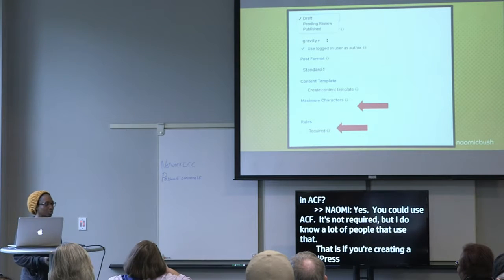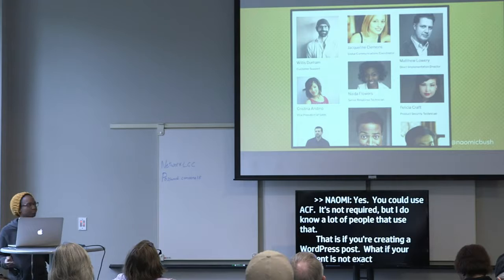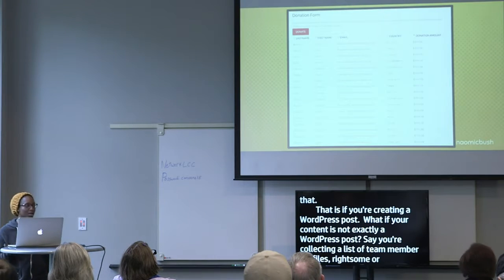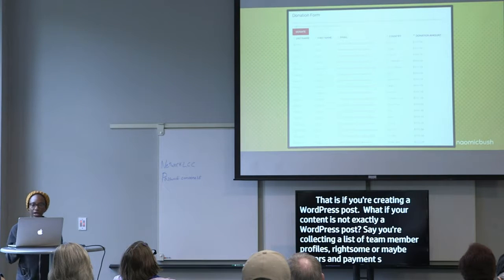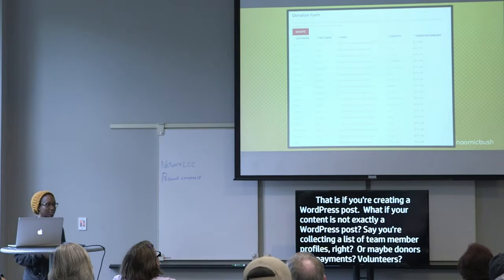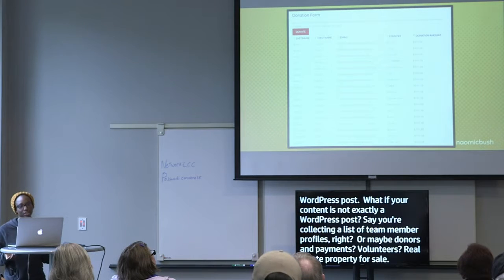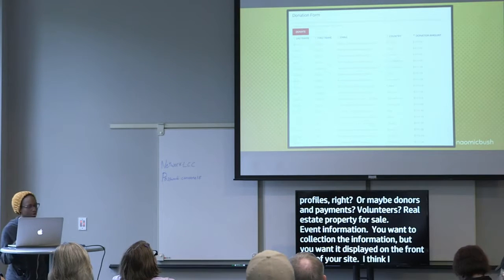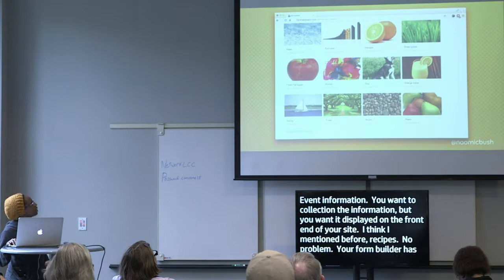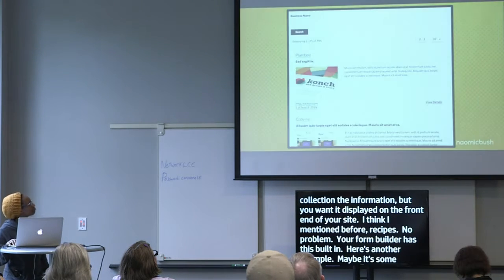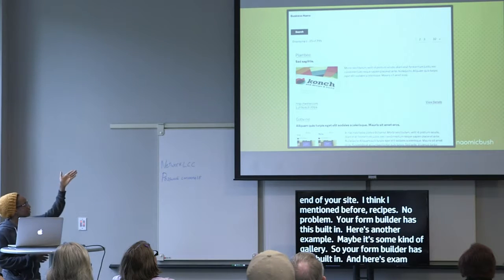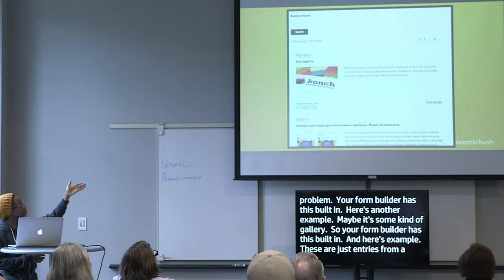But what if your content isn't exactly a WordPress post? Say you're collecting a list of team member profiles, donors and payments, volunteers, real estate properties, or event registrations. You want to collect this information and also display it on the front end of your site — recipes, no problem. Your form builder has this built in. Here's another example — maybe it's some kind of gallery. These are actually just entries from a form builder displayed in different formats.